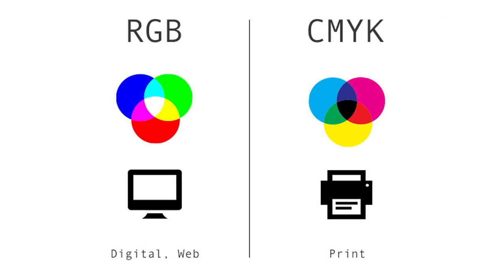Unlike RGB, the CMYK color space — Cyan, Magenta, Yellow and Black — is used for printing materials. It's one of the most common and commercially available pigment combinations and can be found almost everywhere, from professional printers to the printer you might find at home or your office. Unlike RGB where light is used to create a desired color, with CMYK physical ink is combined by the printing machine to achieve this.